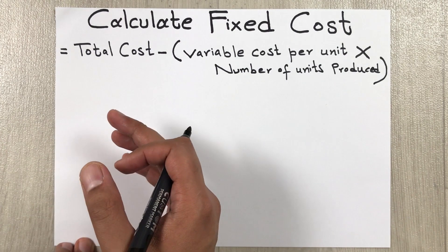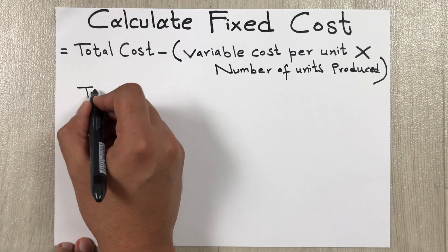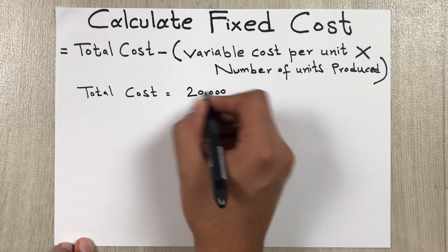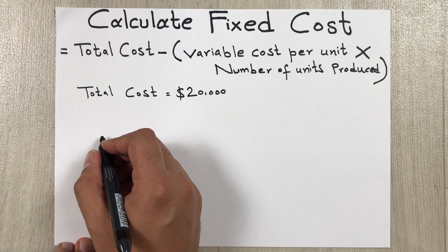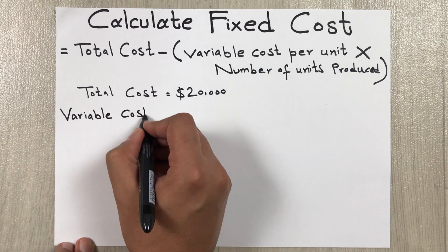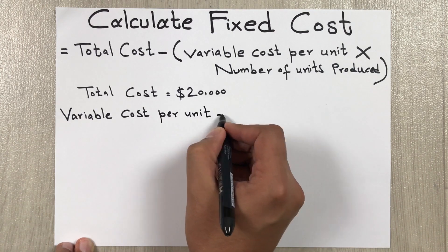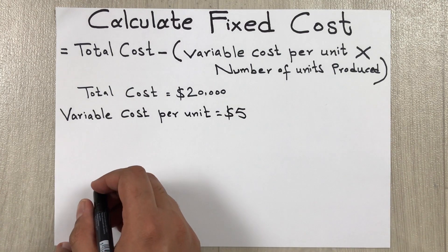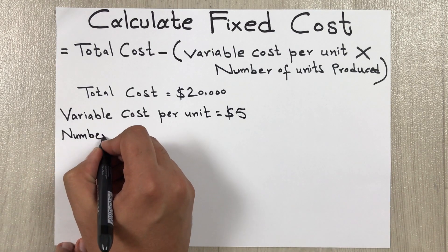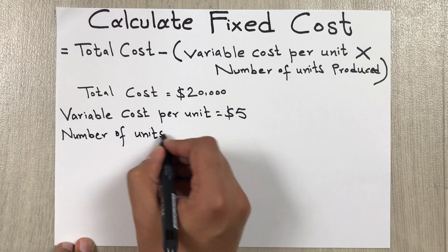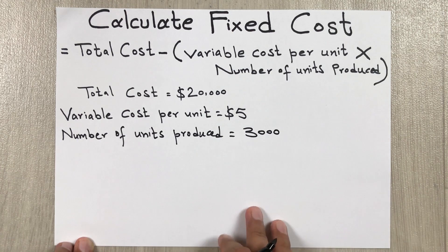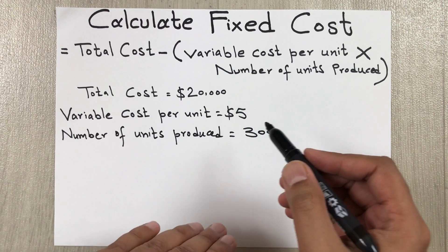Let's say the total cost of production is twenty thousand dollars, the variable cost per unit is five dollars, and the number of units produced is three thousand. We already have all the values and we simply put them into the formula.